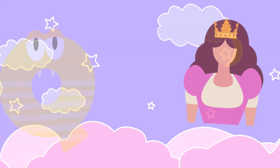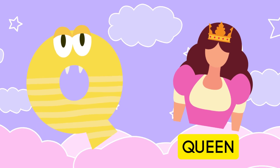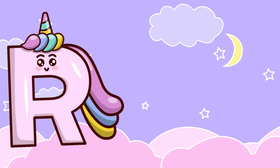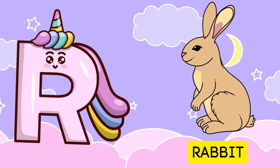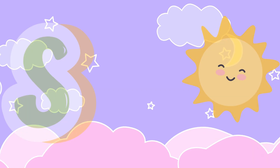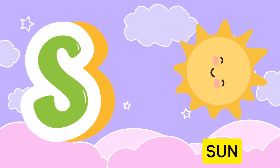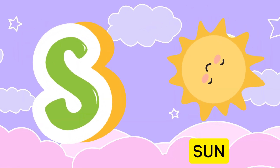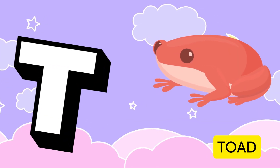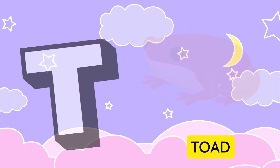Q is for queen, qu-qu-queen. R is for rabbit, r-r-rabbit. S is for sun, s-s-sun. T is for toad, t-t-toad.